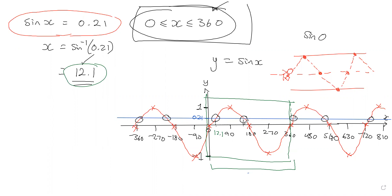So essentially you're looking at the section of the graph between 0 and 360 — there are two answers. We know 12.1 is the first one. Now there's another thing I want you to understand: the graph basically does its thing over 360 and then just copy-pastes itself every 360. So if the range is bigger, it's just that same pattern repeating.